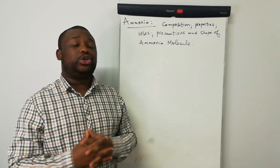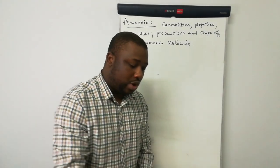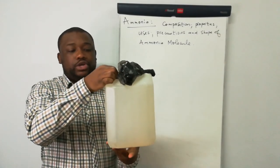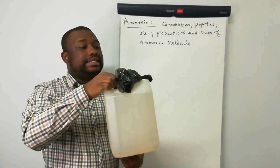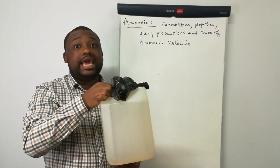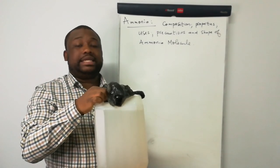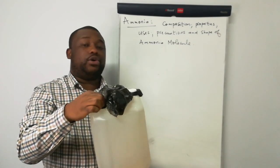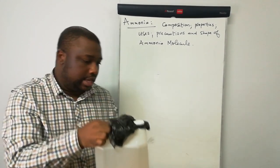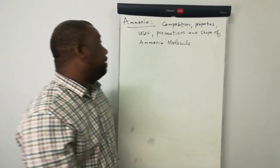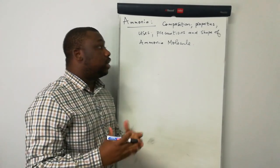Make sure you remain tuned till the end so that you can learn this. Before going further, this is the ammonia we're talking about — it's a very light liquid that gets evaporated in contact with air, which is why we use this plastic container, just to avoid the liquid evaporating in contact with air.